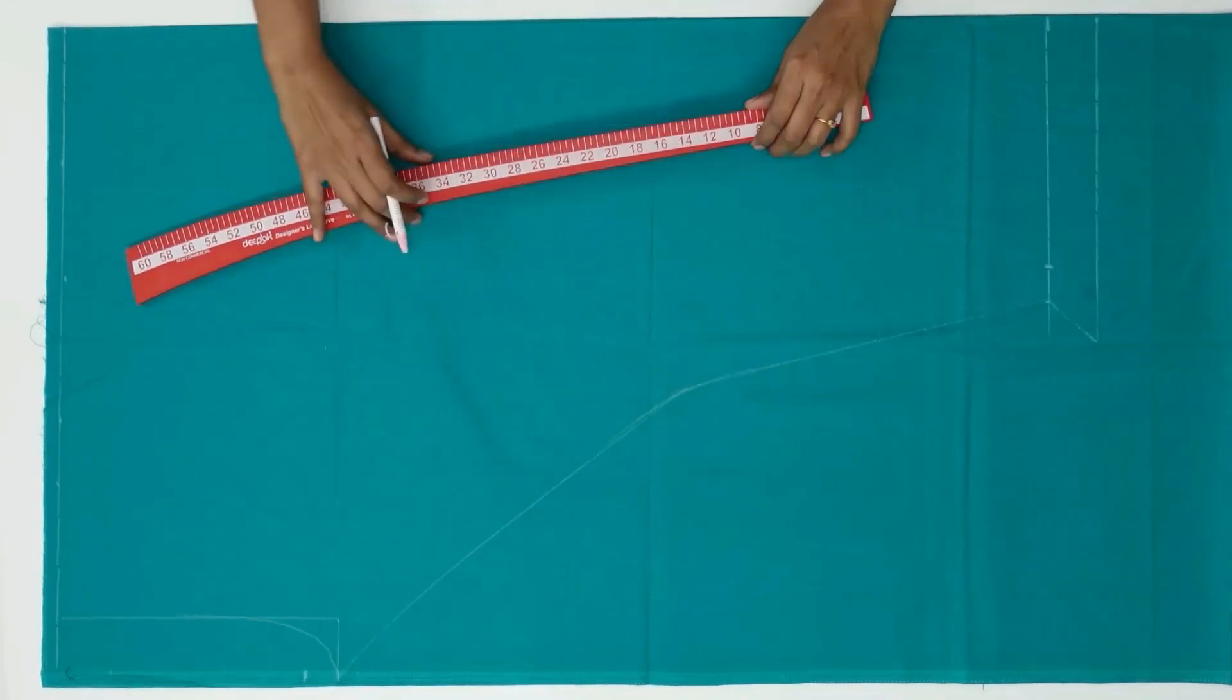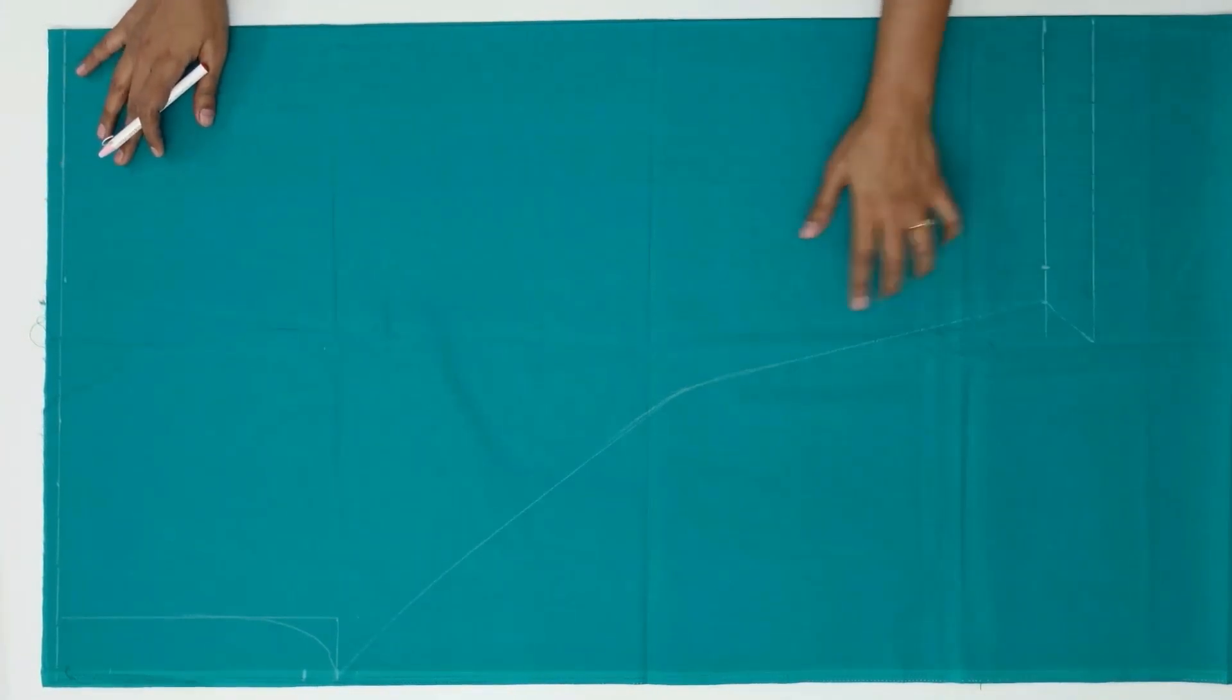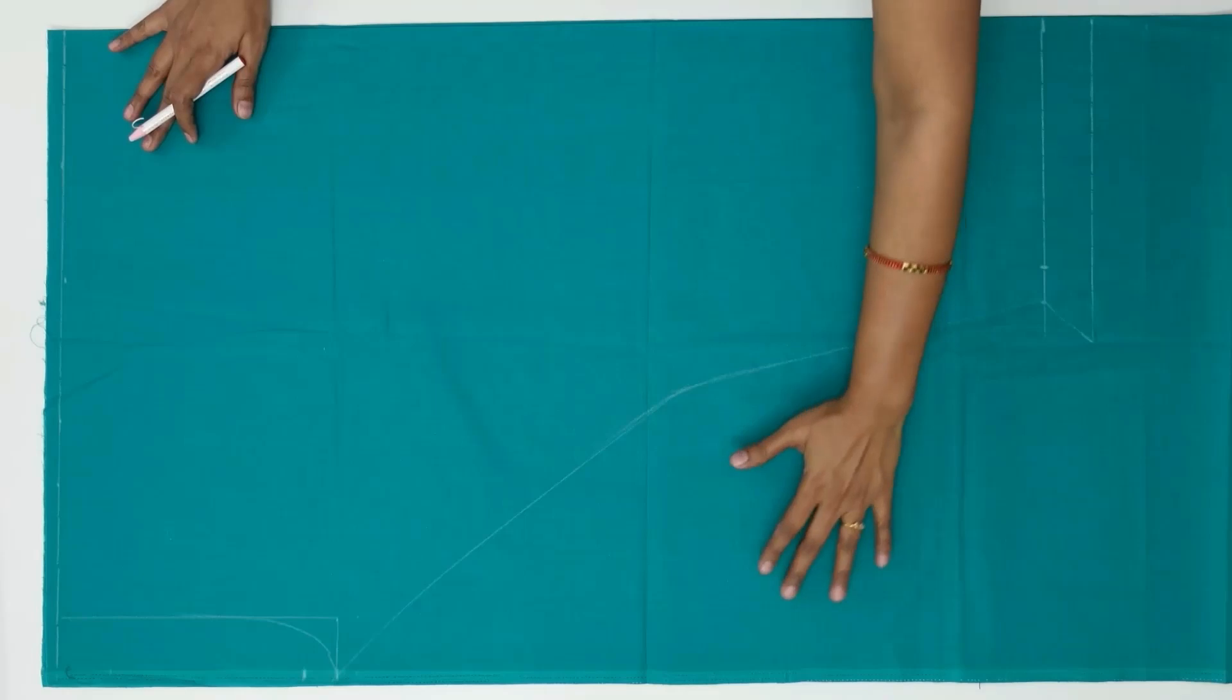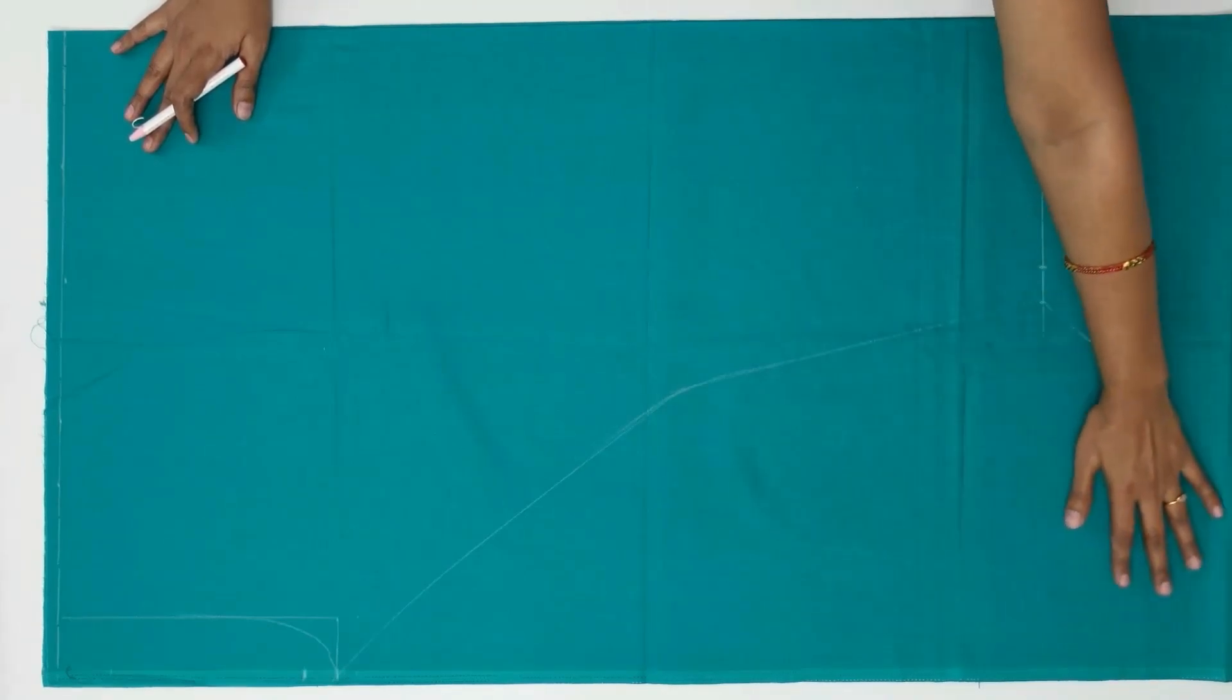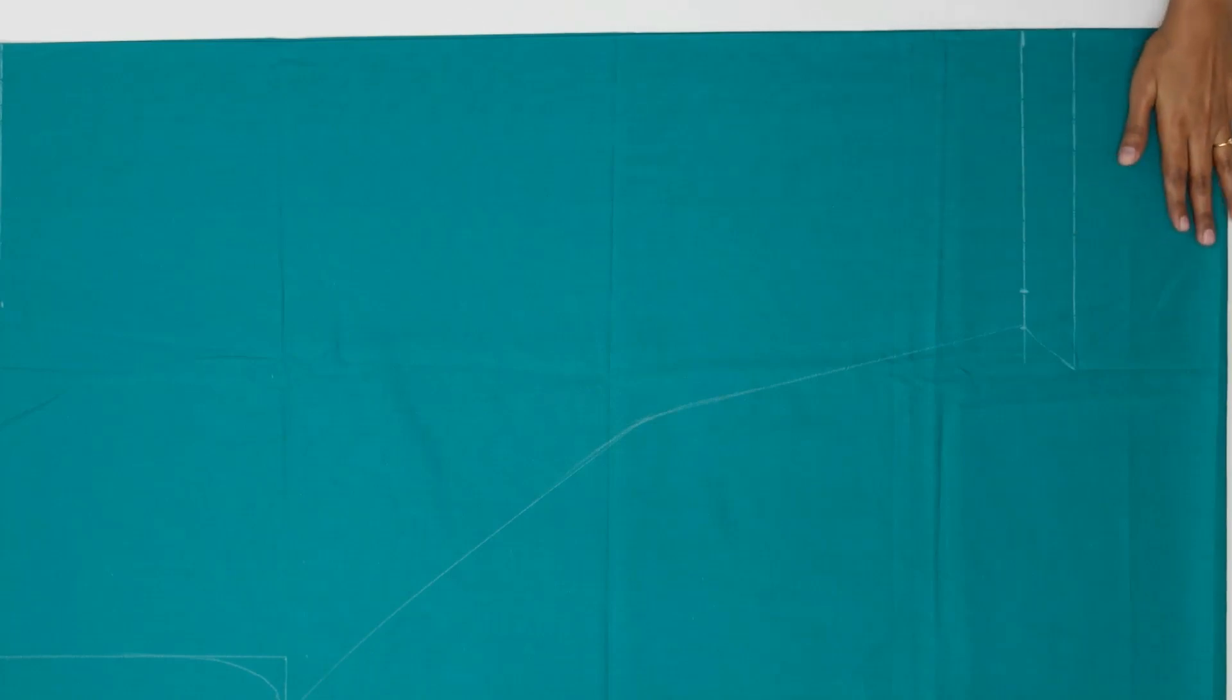So now the leg part is ready. After cutting this, in this fabric we are going to make the waistband. Now let's cut this leg part.